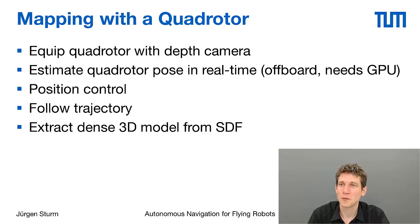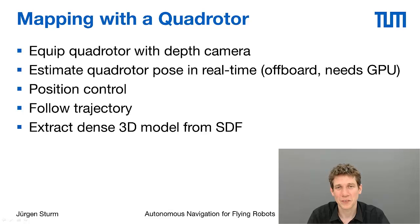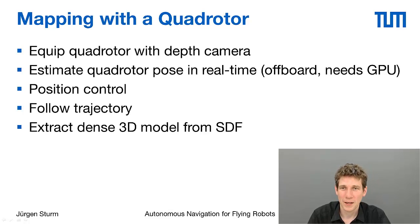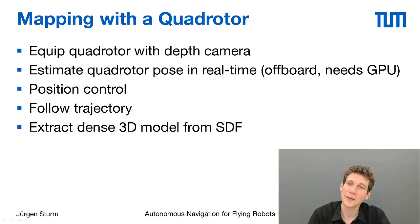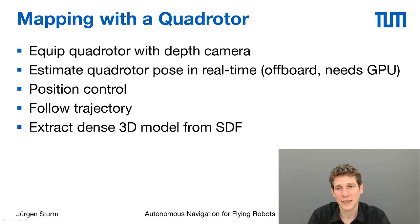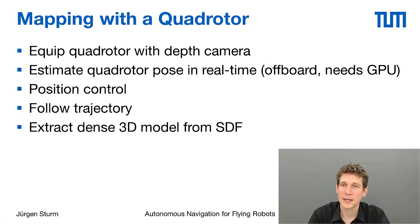We equipped the quadrotor with a depth camera and feed the depth images to an external computer — because the onboard PC is not strong enough at the moment. We update the signed distance function and estimate the next camera pose, then feed back this camera pose to position control running on the quadrotor, which uses it to follow a trajectory.